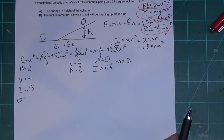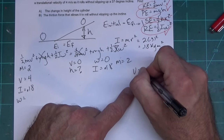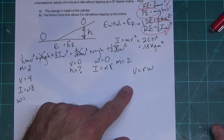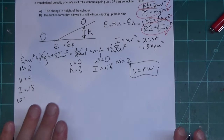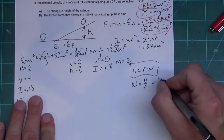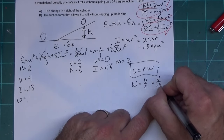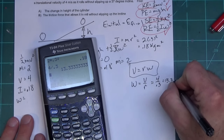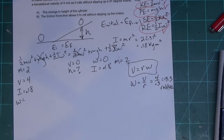The linear and rotational velocities are tied together by v = rω. Solving for omega: ω = v/r. With initial velocity v = 4 m/s and r = 0.3 m, we get ω = 4 ÷ 0.3 = 13.3 rad/s. Keep everything in radians per second for these rotational problems.